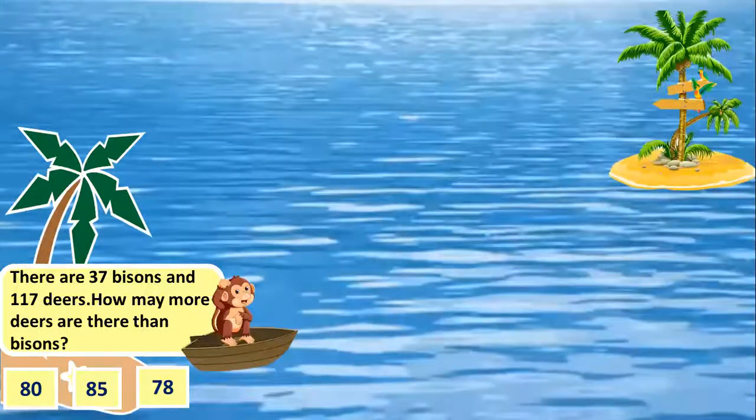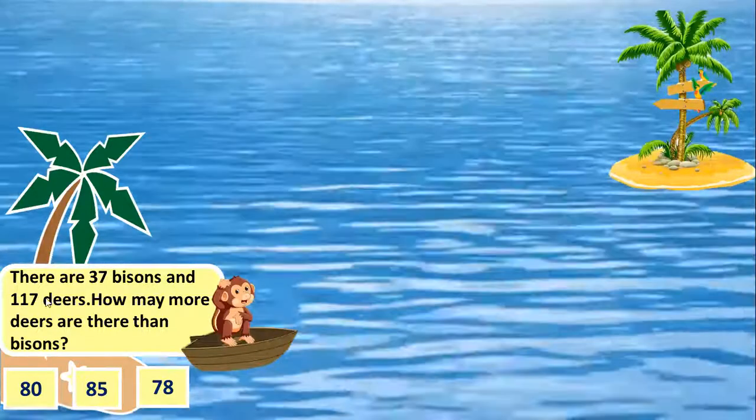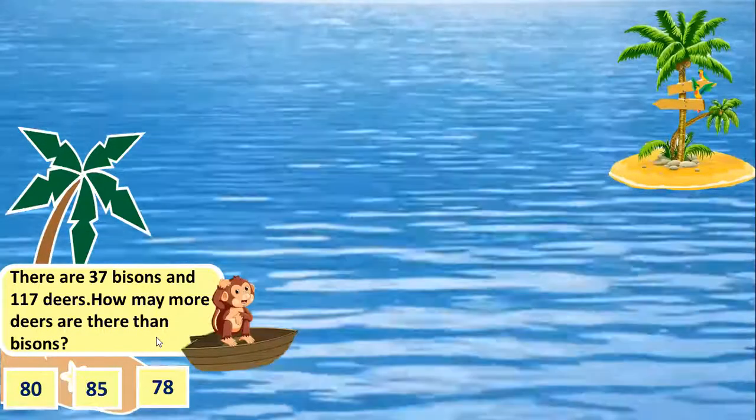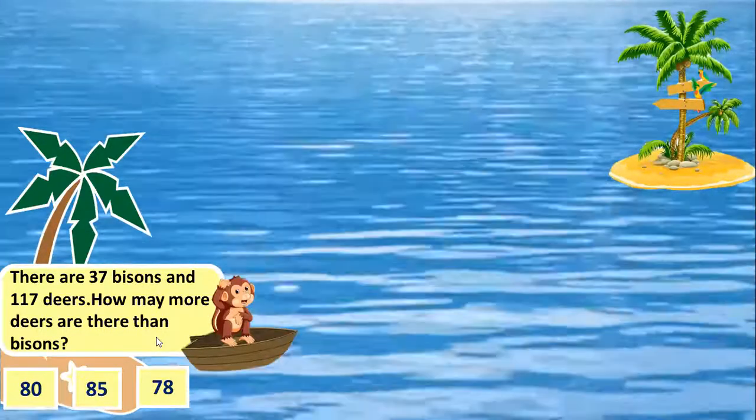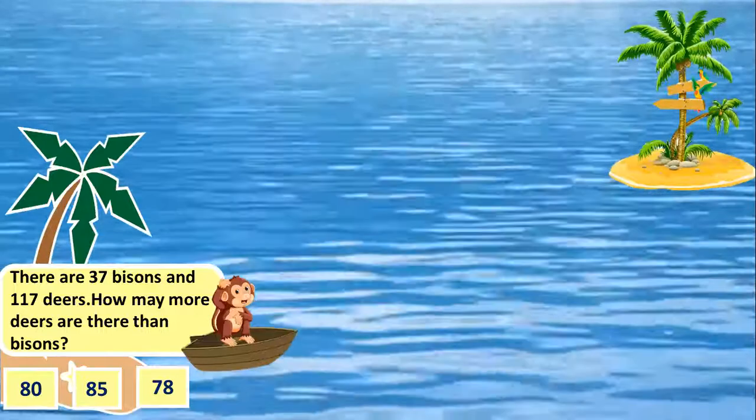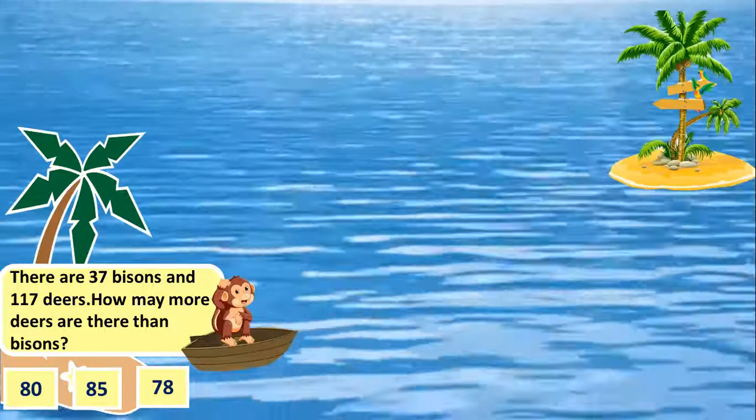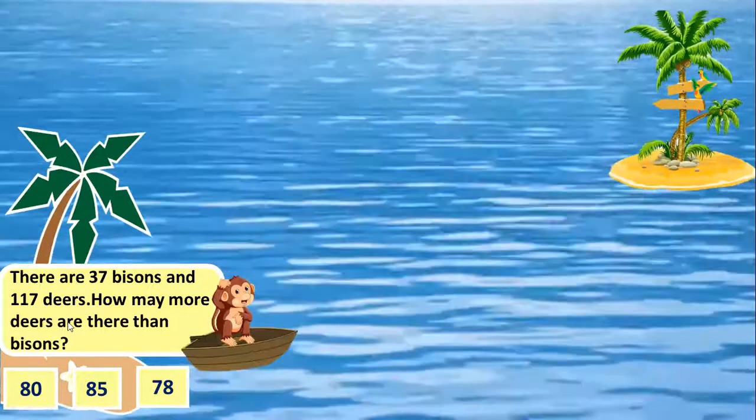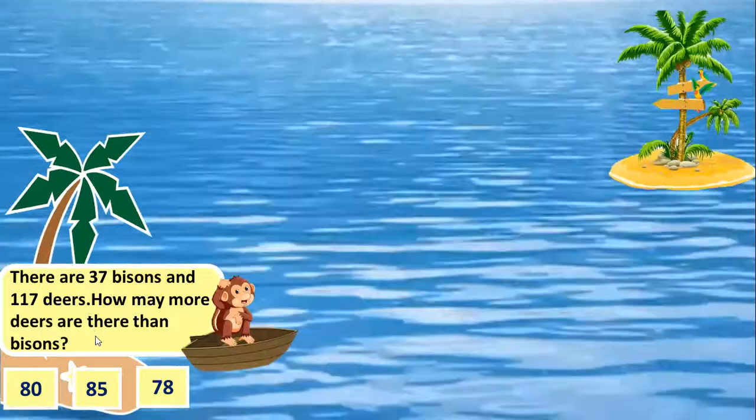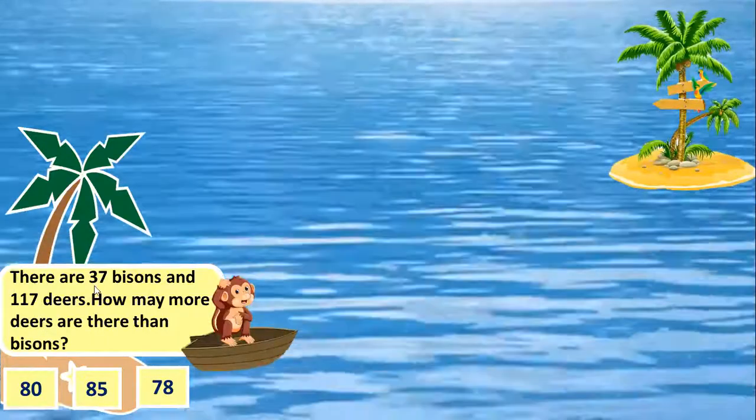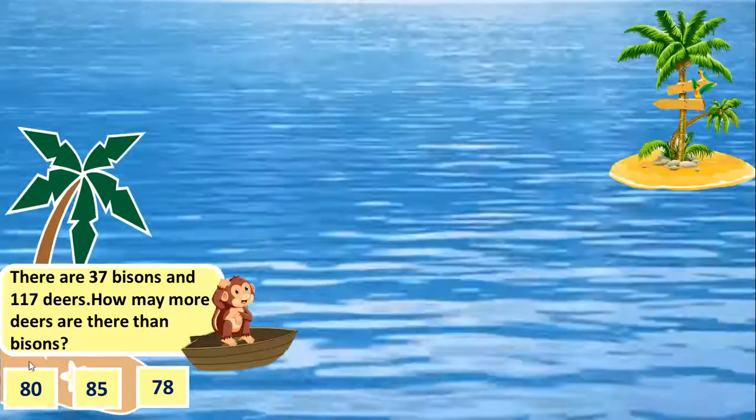There are 37 bisons and 117 deers. How many more deers are there than bisons? What we have to do is we need to subtract to find out how many more deers are there than bisons. So 117 minus 37 is nothing but 80.